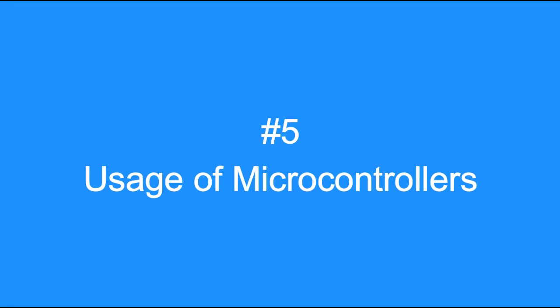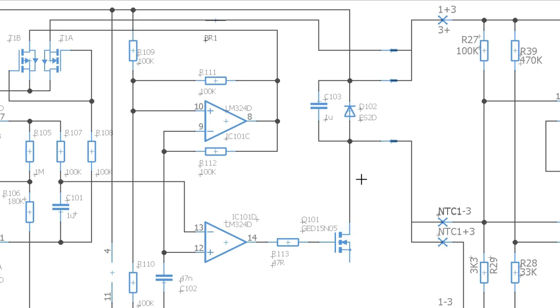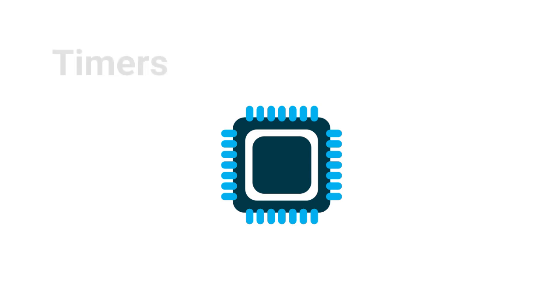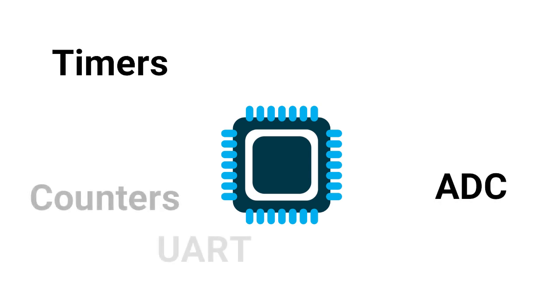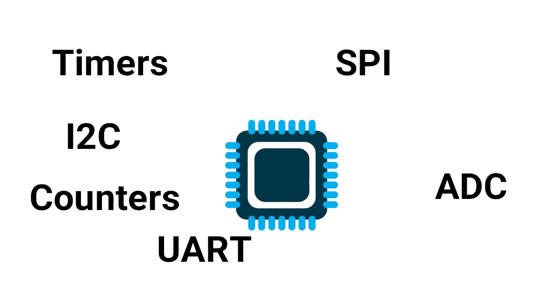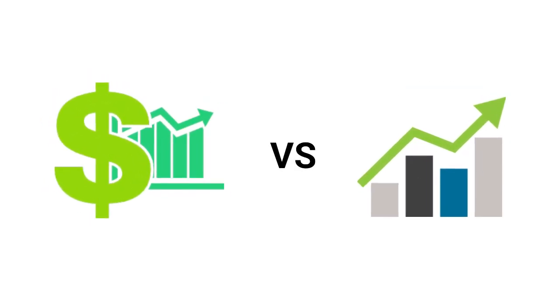Tip number 5: Usage of microcontrollers. Circuit designers often overkill their design by using too many components rather than using a microcontroller, which would make life a lot easier. Many modern MCUs come in small packages with built-in features like timers, ADC, counters, serial communication, I2C, SPI, and more. Next time, combine your analog hardware with the right MCU and you will see better cost versus performance benefits.